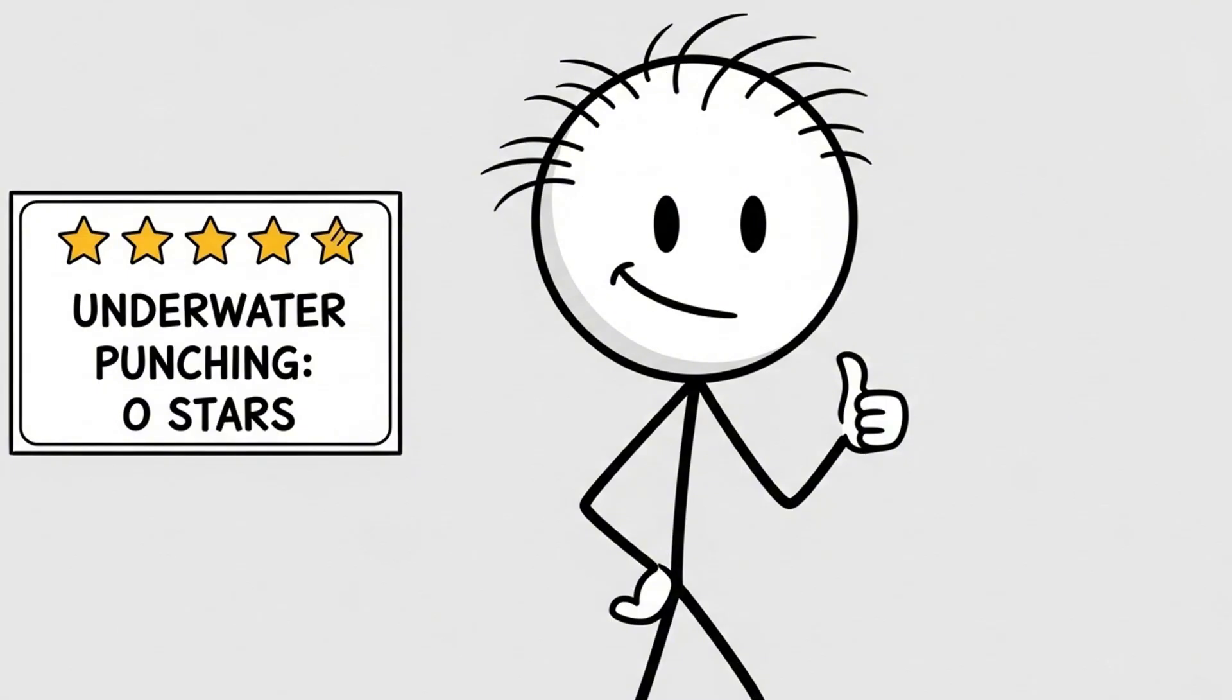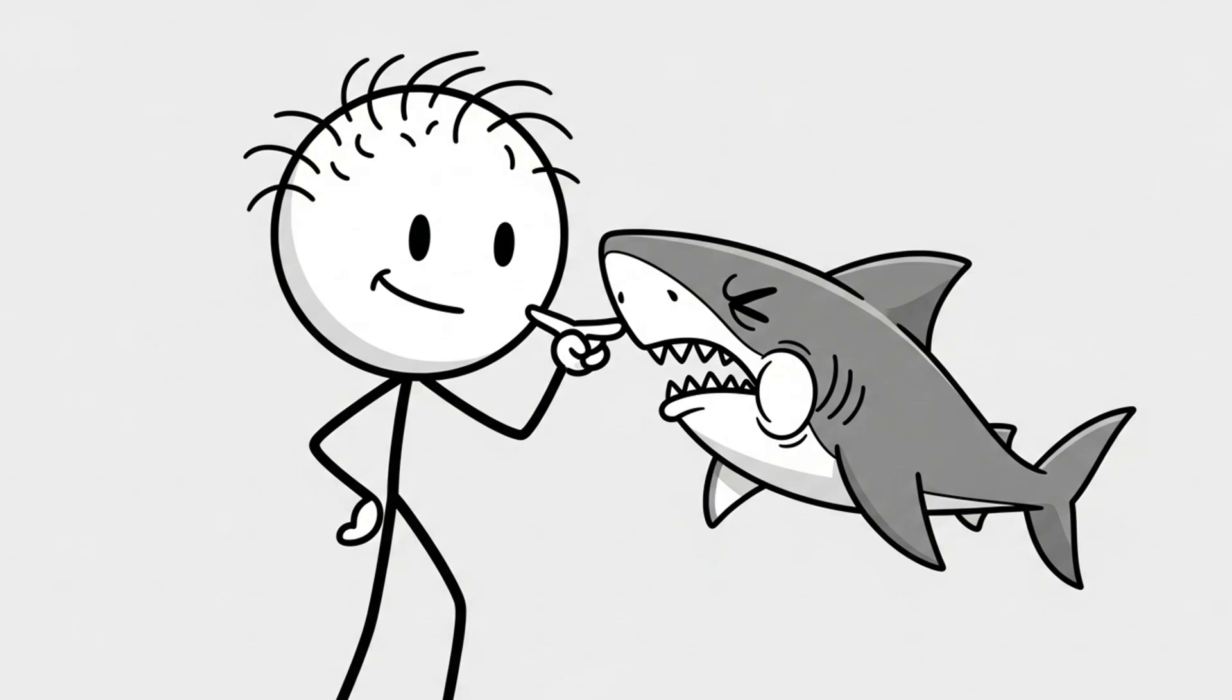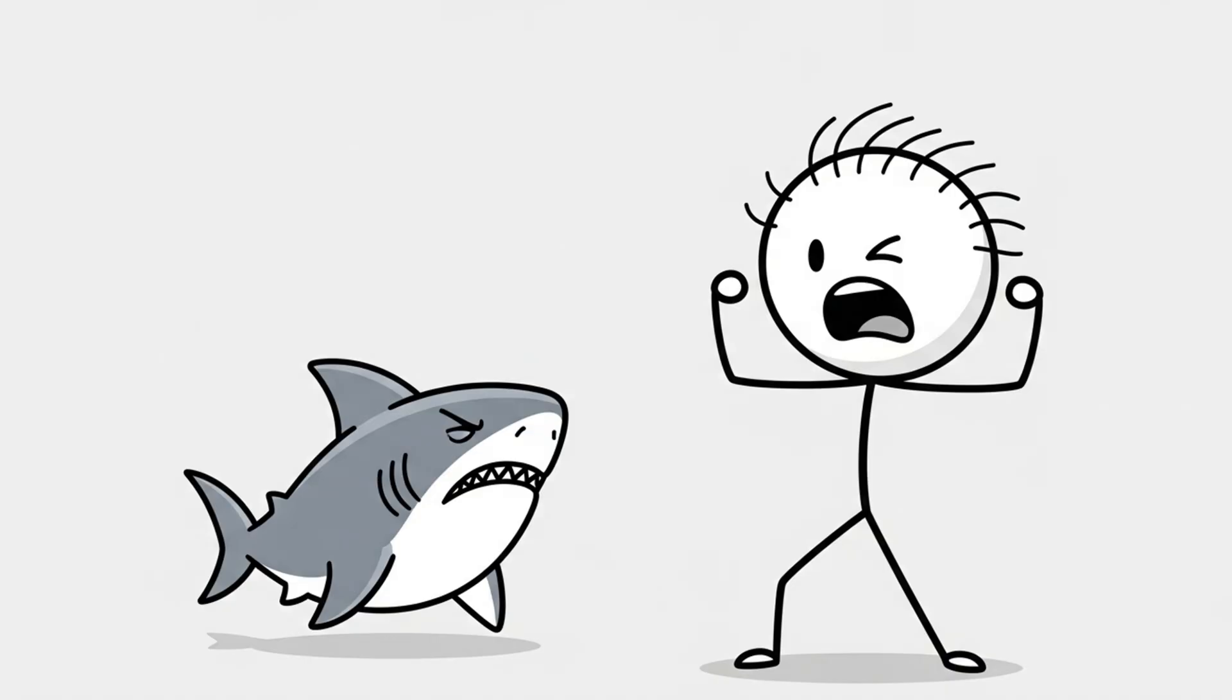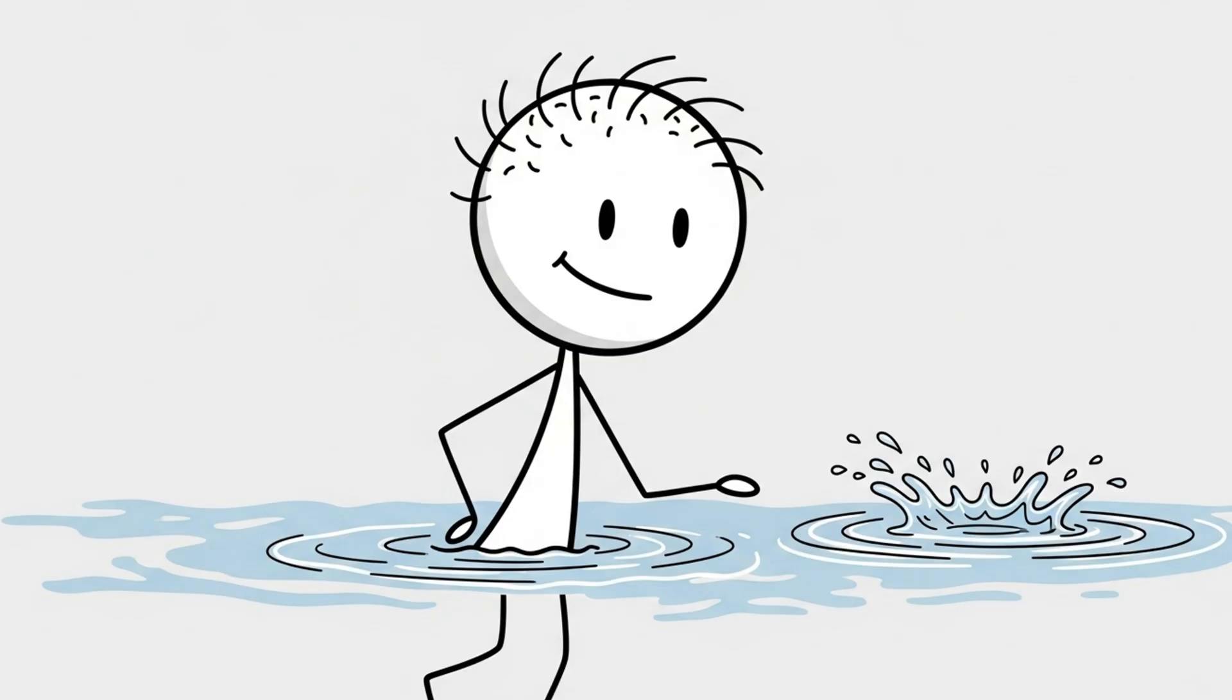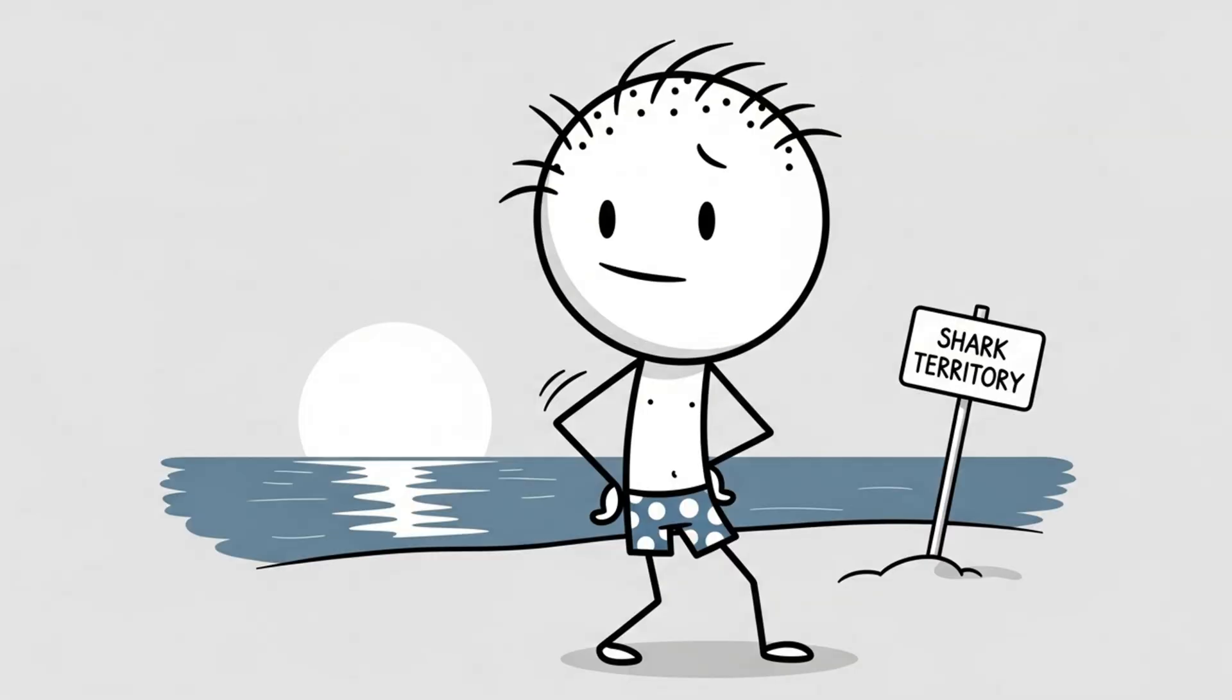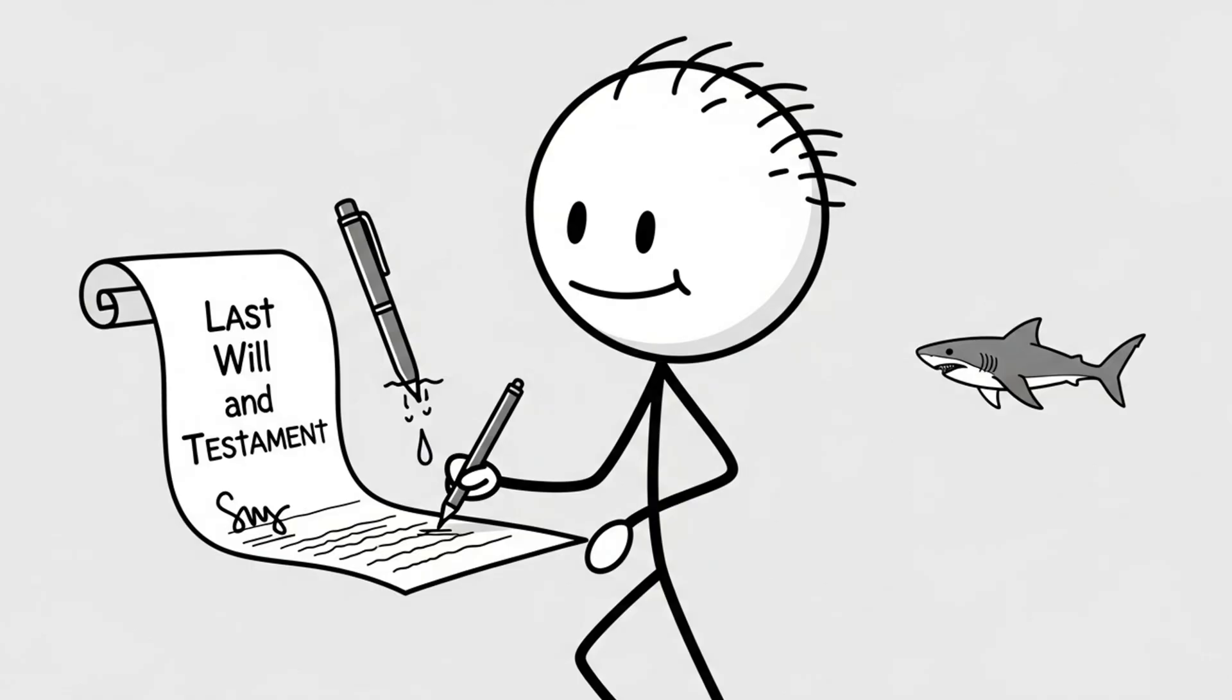10 out of 10 would not recommend. What does work better? Going for the eyes or gills. Sharks don't like having their sea holes and breathe holes messed with. It disrupts their sensory systems and says, hey, I may be chewy, but I'm not easy. But realistically, prevention greater than punching. Avoid erratic splashing, don't swim where there are seals, aka shark buffet, and maybe skip that midnight dip in known shark territory. Because if your defense plan is underwater boxing match with apex predator, you might want to update your will first.